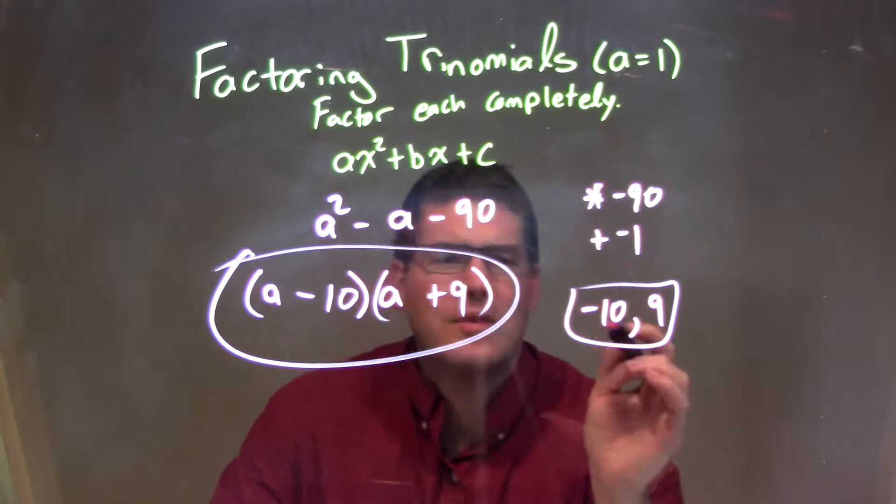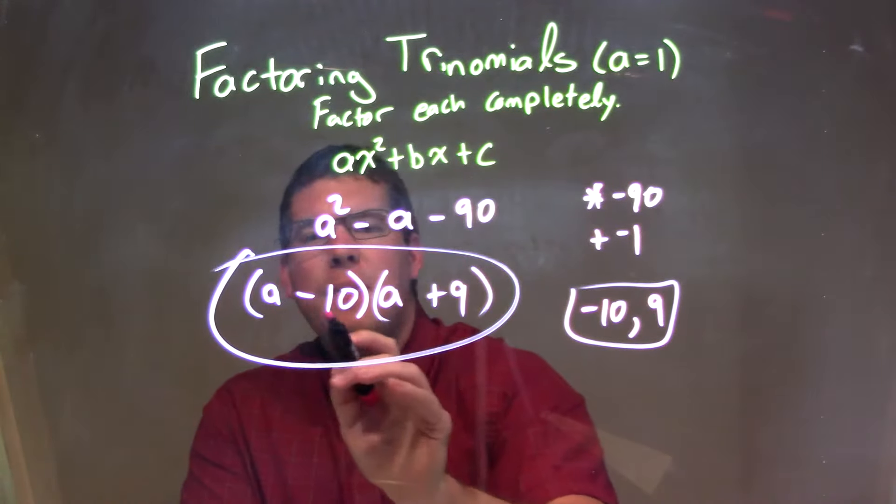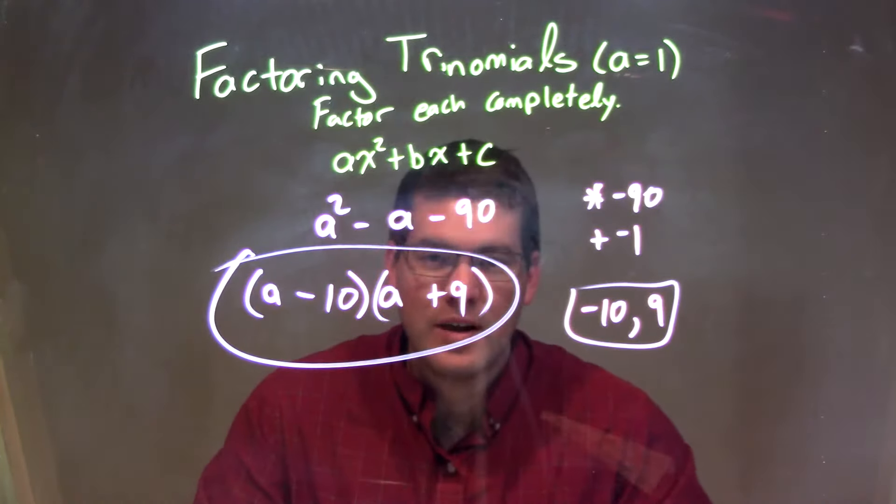So those two numbers come out to be negative 10 and positive 9. So I can write correspondingly when factoring this out: a minus 10 times a plus 9, and that is our final answer.